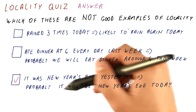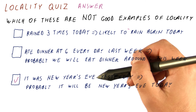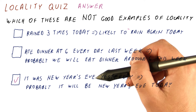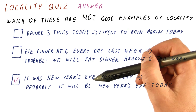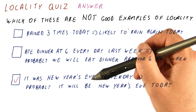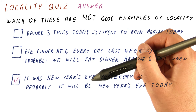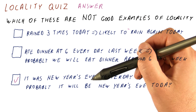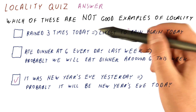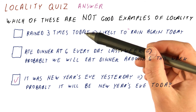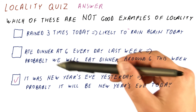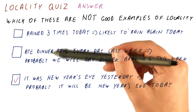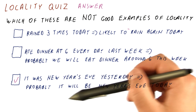For example, it being New Year's Eve one day usually means that the next day it won't be New Year's Eve, because New Year's Eve is one of those things that do not have much locality. If it was yesterday, then we know it's not going to be today, which is kind of the opposite of what the locality principle is about. As we can see, some things do have the locality property and some things do not.